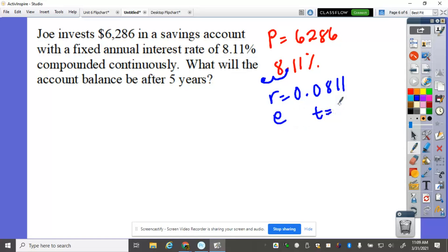And the time is five years. So A equals P, E raised to the RT, A is equal to principal is 6,286, E rate is 0.0811 times 5.